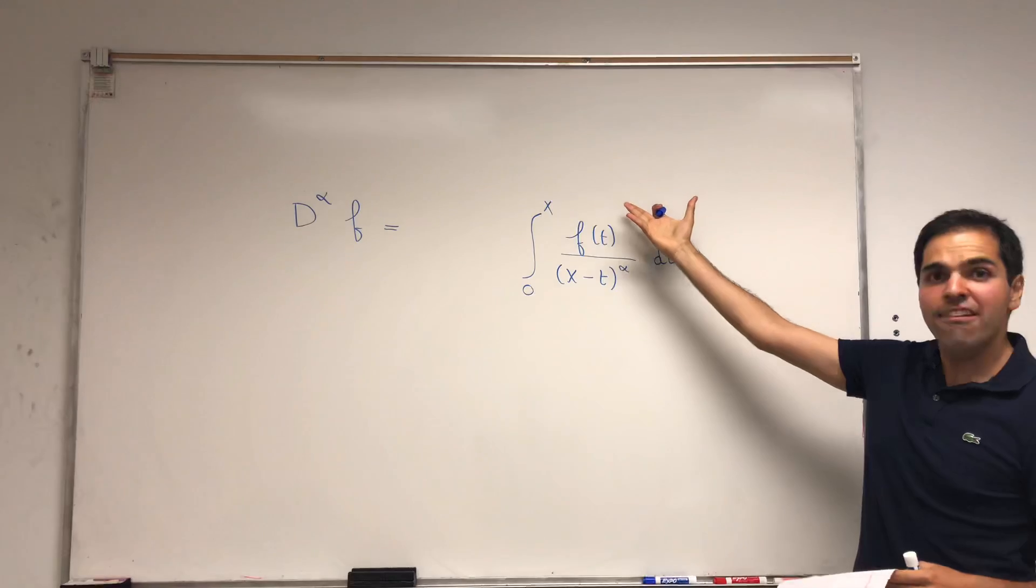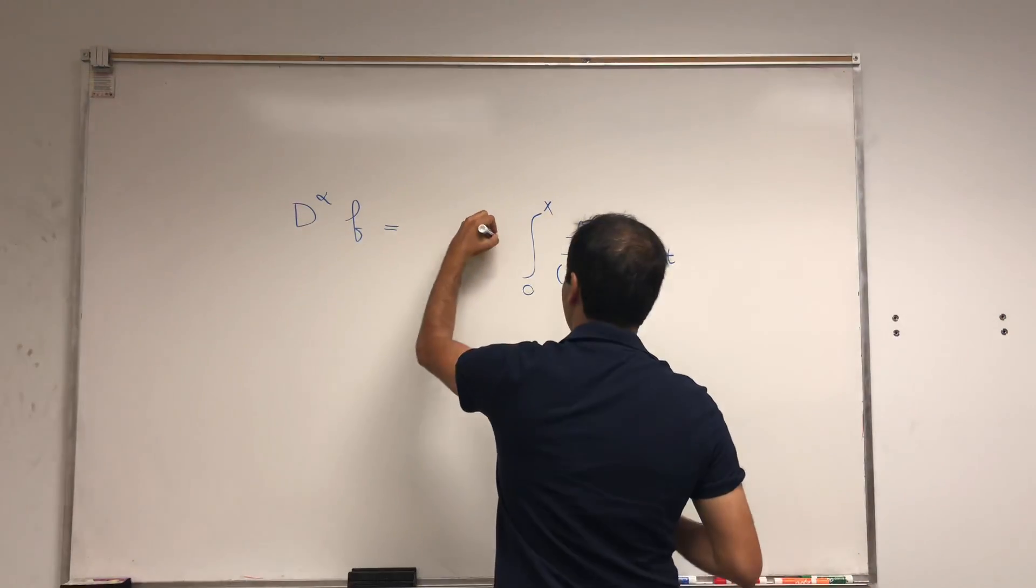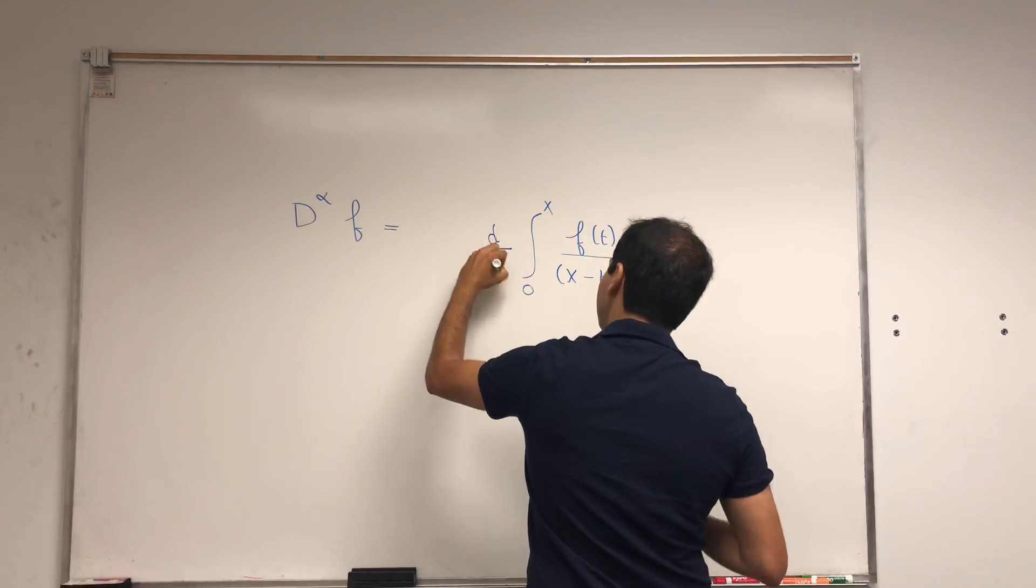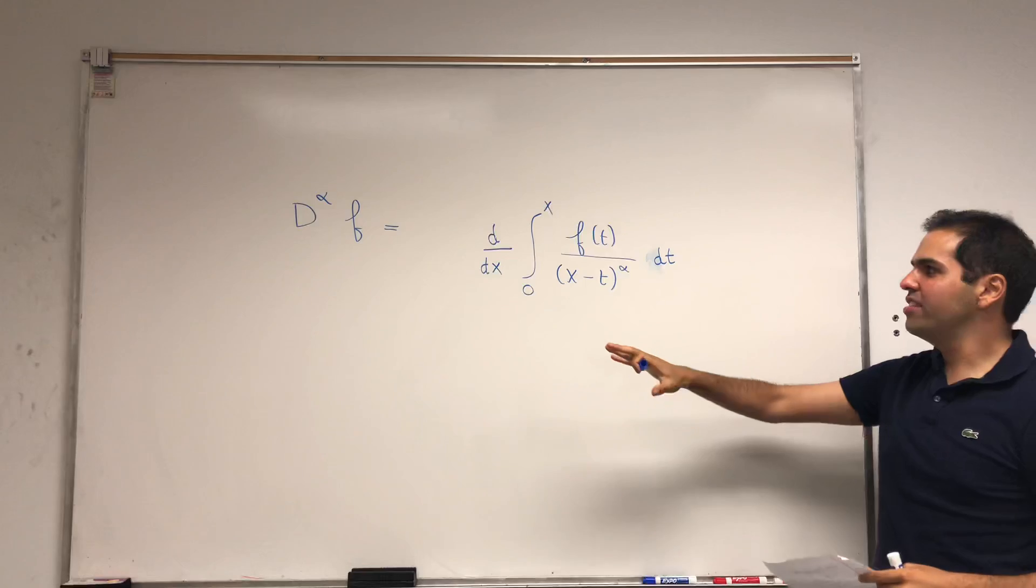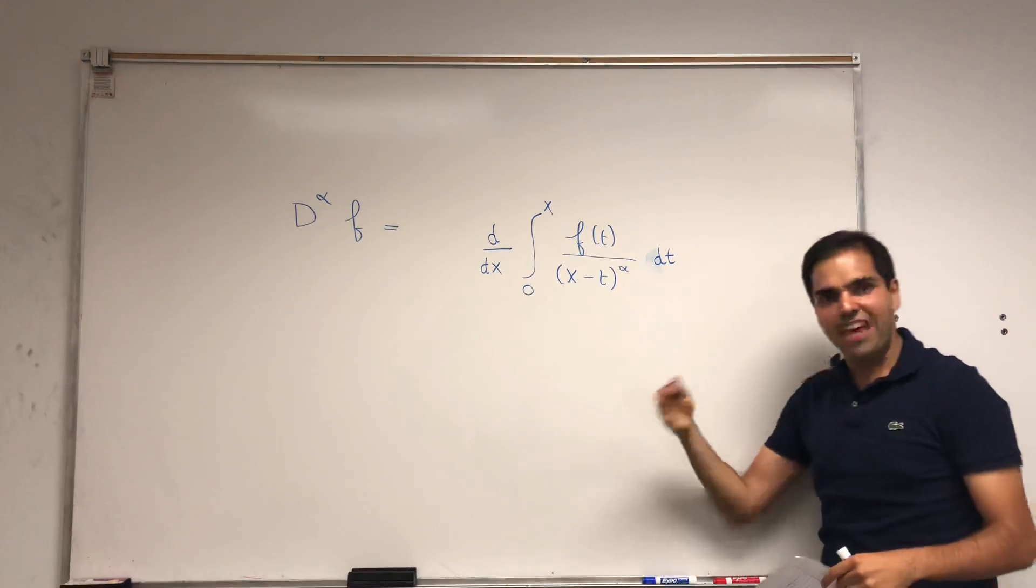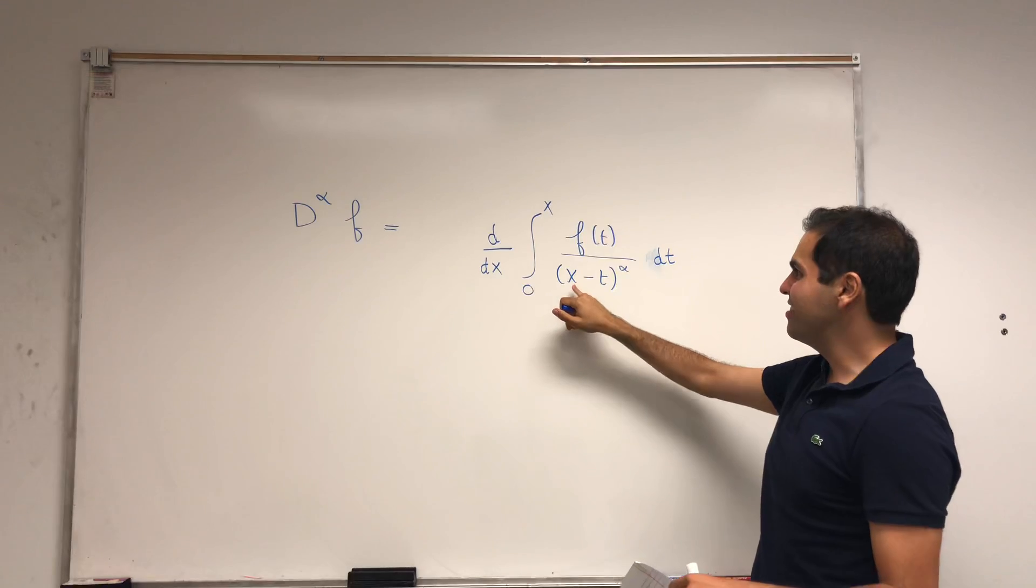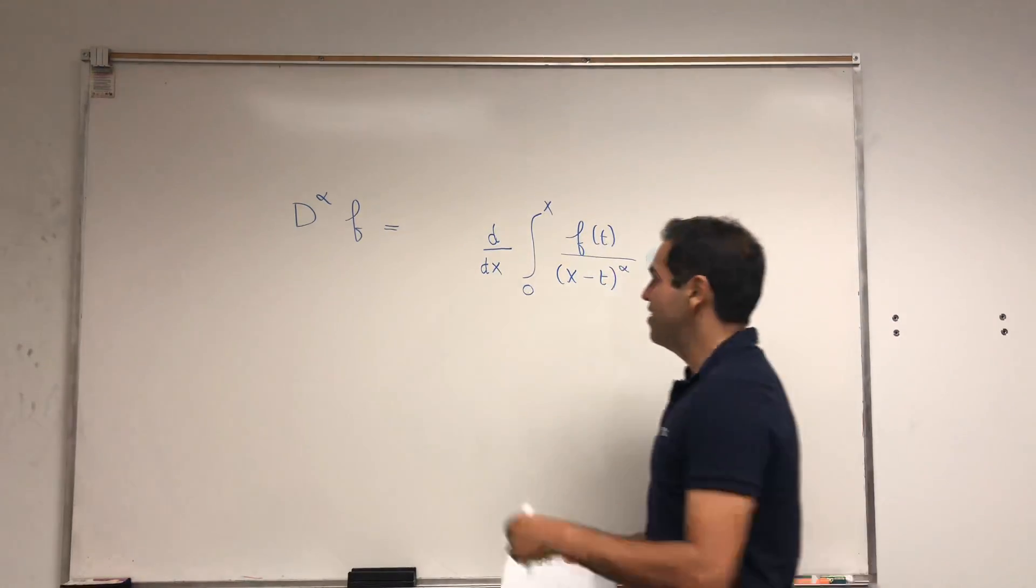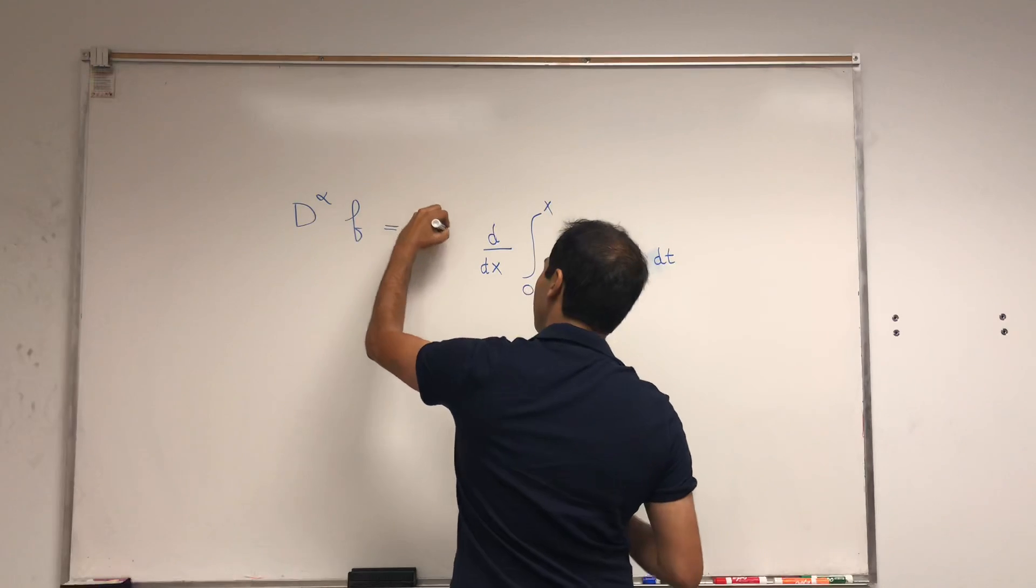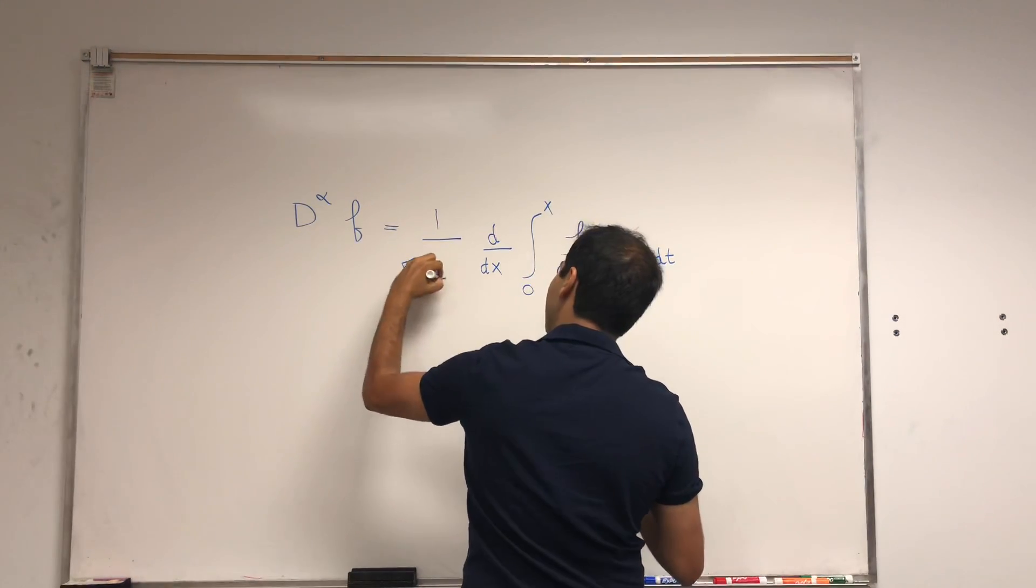So d over dx. You take the integral, take the derivative, and you're tempted just to use FTC, but that's not quite true because there is an x in here which makes it very similar. And lastly, you just multiply by some constant, gamma of one minus alpha, so a normalizing constant if you want.